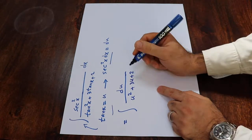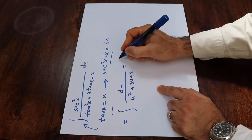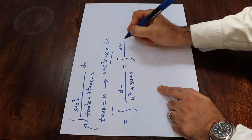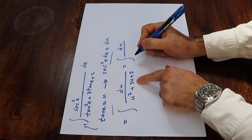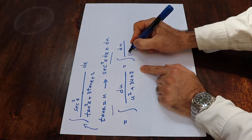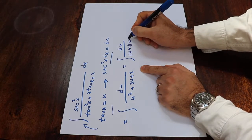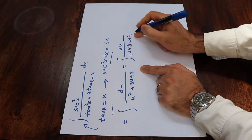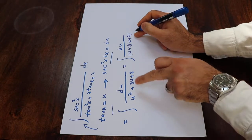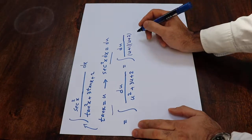And so, which is equal to integral of du over, instead of u squared plus 3u plus 2, I write u plus 1 times u plus 2. u plus 1 times u plus 2 will be equal to u square plus 3u plus 2. So to solve this rational function,